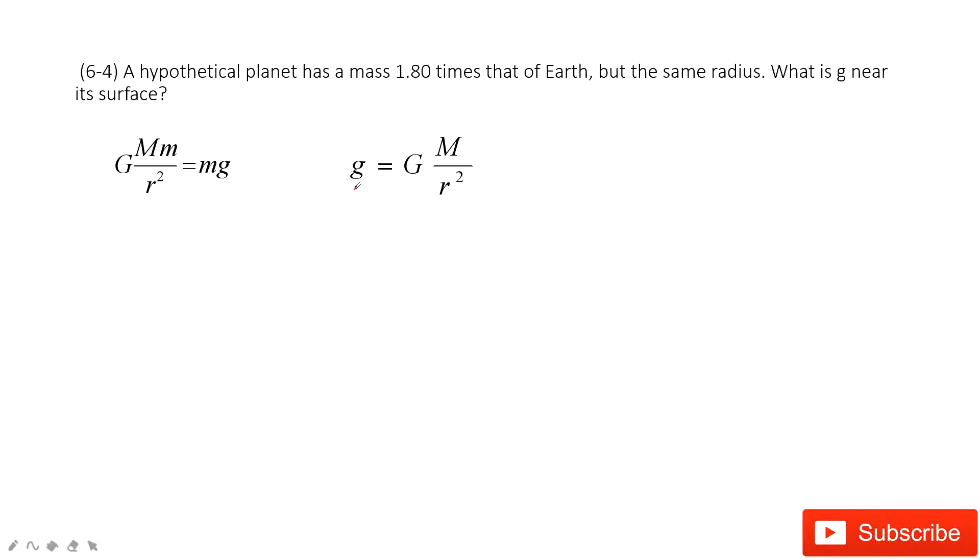So this g, acceleration due to gravity on Earth, just equals G times mass divided by R squared.